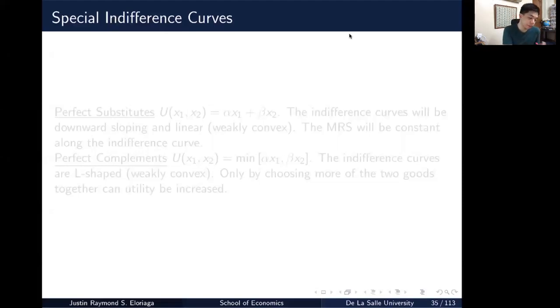So while the typical shape of an indifference curve may look something like the one I'm drawing now, you have a downward sloping strictly convex curve, there are cases wherein there are special indifference curves which may look a little bit different from your typical indifference curve and they represent specific types of goods.